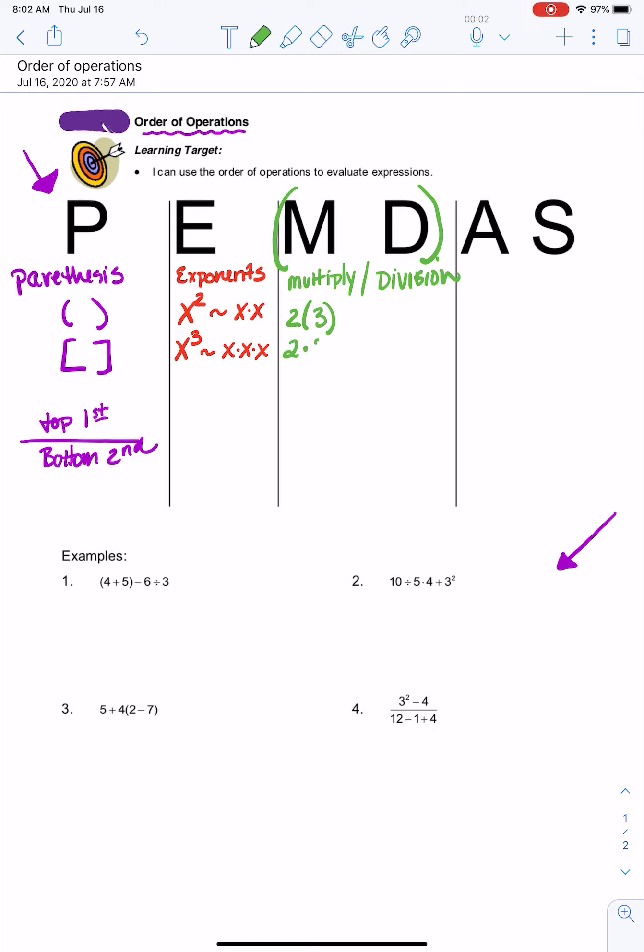You also might see a dot, that means to multiply. We rarely use X because that could be a variable, so be careful with that. And then division, you might often see a fraction. As I said before, that means four divided by two. You could see that division symbol, or you could see a slash. All of those things mean division.